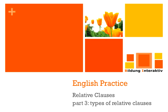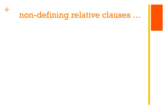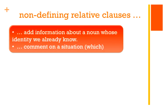Hi everybody and welcome to the third part of our triple video set on the English relative clauses. In this part we are talking about the different types of relative clauses and we start with the so-called non-defining relative clause. Let me give you a definition and then show you some examples.